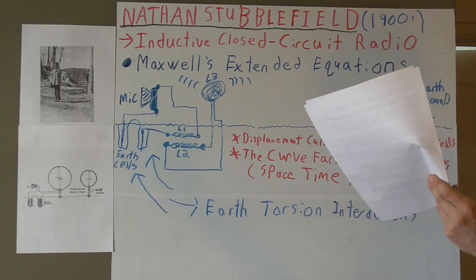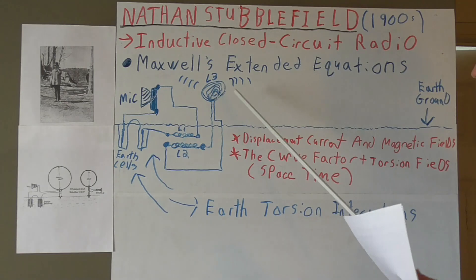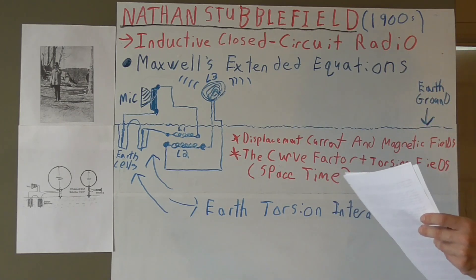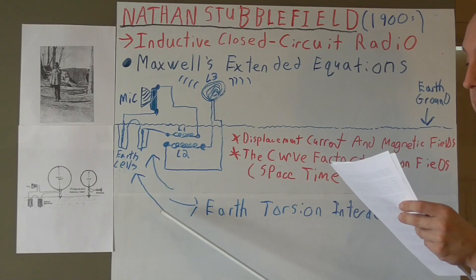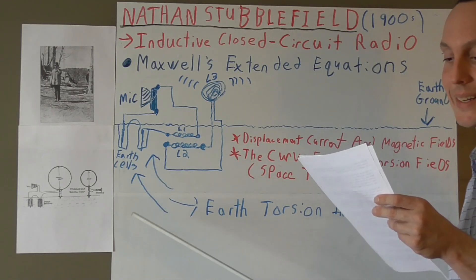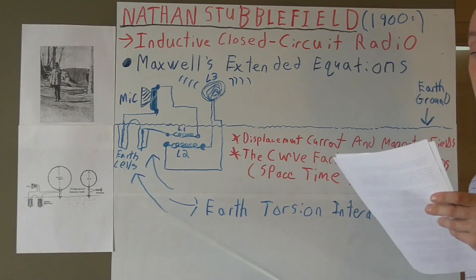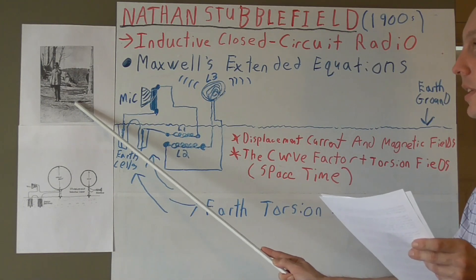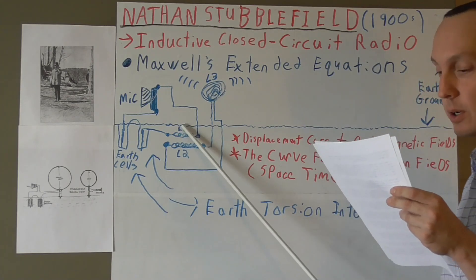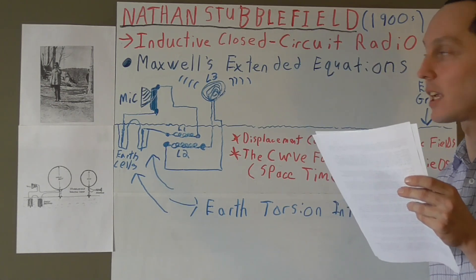If we factor in the curve factor of Maxwell's extended equations, which can account for systems like torsion fields, with Nathan's closed radio system, all of a sudden this could work even better. One possible explanation is that torsion fields could interact with the magnetic fields generated by the system, either by amplifying or attenuating them. Torsion fields are thought to be able to propagate through solid objects, including the Earth, and their properties are not affected by electromagnetic shielding, which could make them a very effective medium for wireless communications. In Nathan's system, the use of bifilar coils and grounding of the primary coil could have allowed for stronger interaction between the magnetic fields and the Earth, facilitating the transmission of signals over long distances.